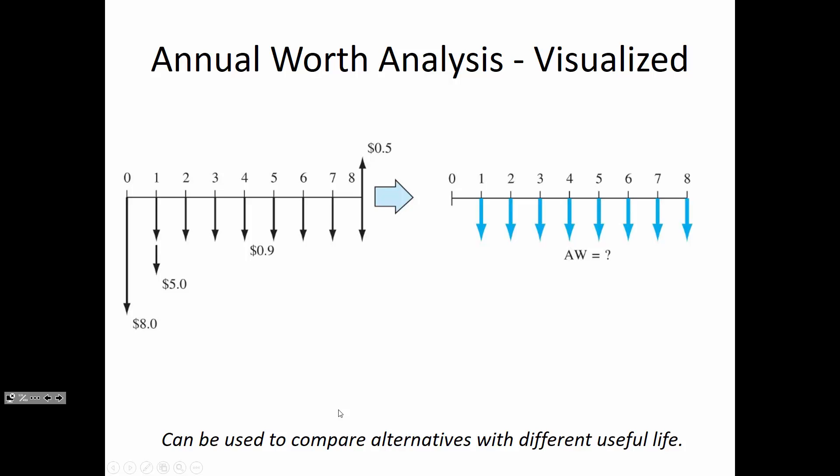The three methods are: least common multiple, where we repeat the cash flow diagrams until they end at the same time; early termination, where we take the longer-lasting equipment and sell it early for a larger salvage value; and contract services, where you rent the equipment for the lesser of the two useful lives.